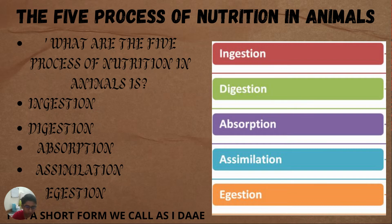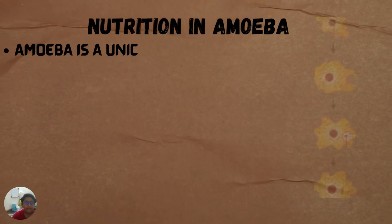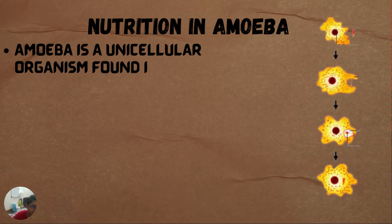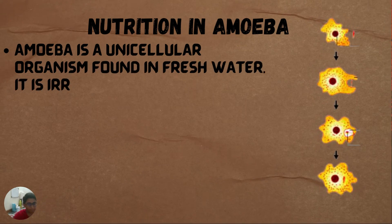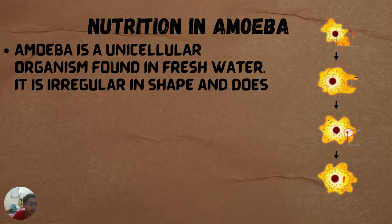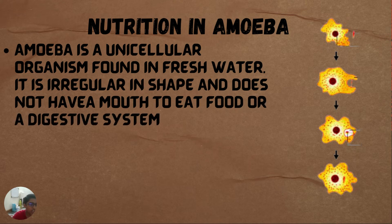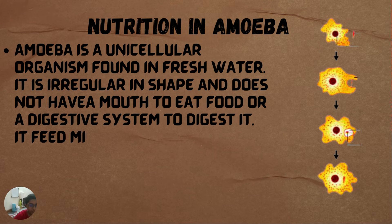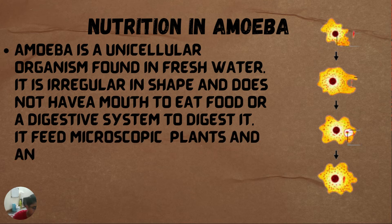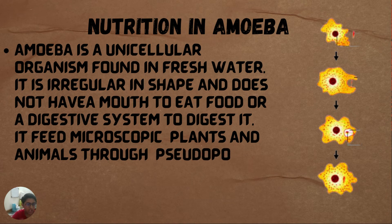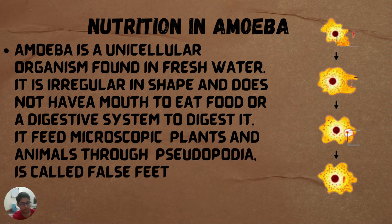The next topic is nutrition in amoeba. Amoeba is a unicellular organism found in fresh water. It is irregular in shape and does not have a mouth to eat food or a digestive system to digest it. It feeds upon microscopic plants and animals through pseudopodia, also called false feet.